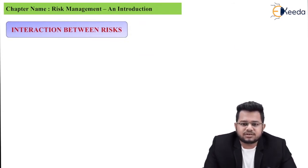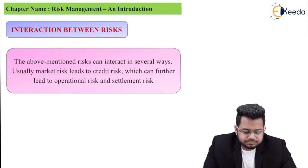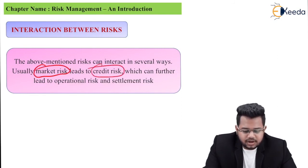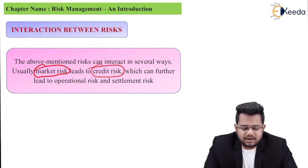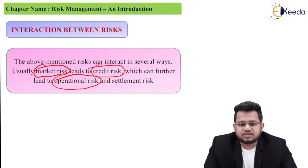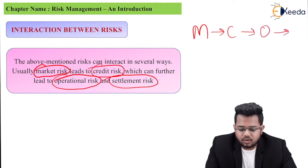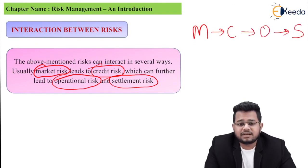Now let's study the interaction between risks. It is not that only one risk happens at a time — these risks interact such that multiple risks can come together and affect you. For example, market risk typically leads to credit risk: if interest rates fluctuate in the market, it can cause borrowers to default, creating credit risk. That credit risk then leads to operational risk, as organizations face cash flow issues. And ultimately there is settlement risk — no settlement happens at the end. So market risk leads to credit risk, which leads to operational risk, which leads to settlement risk. It is a chain of risks.